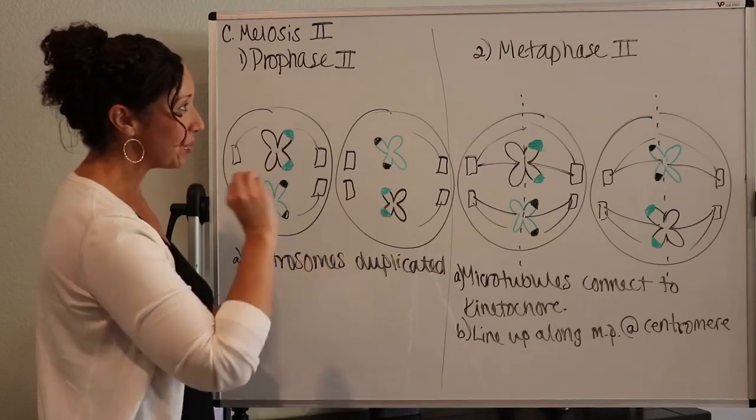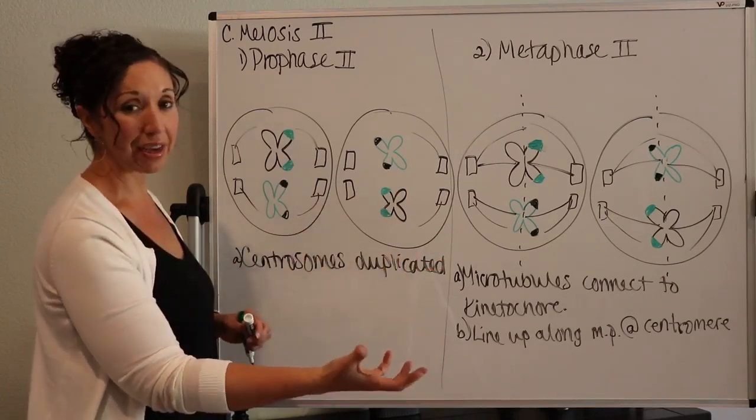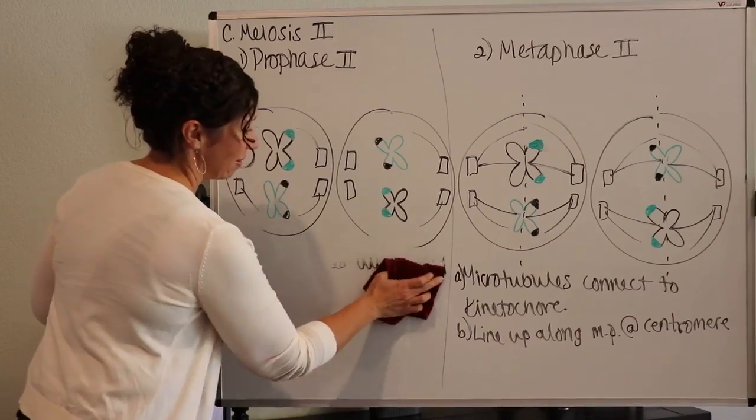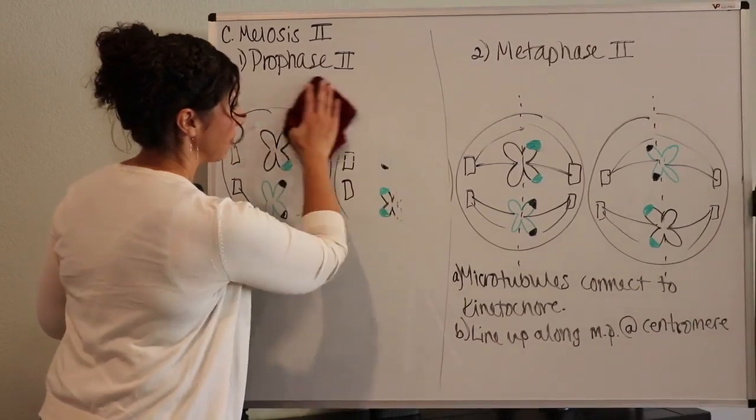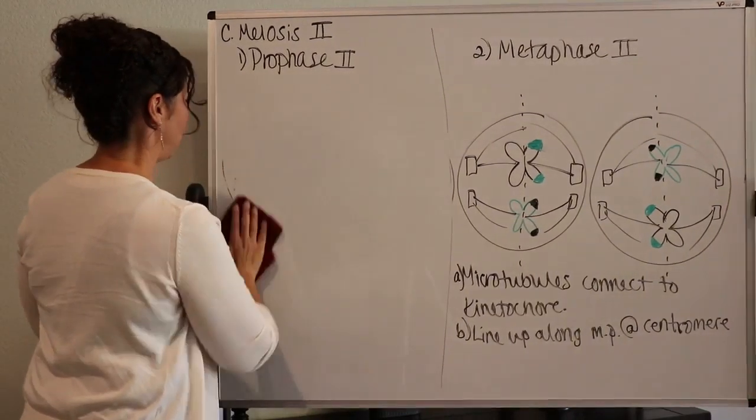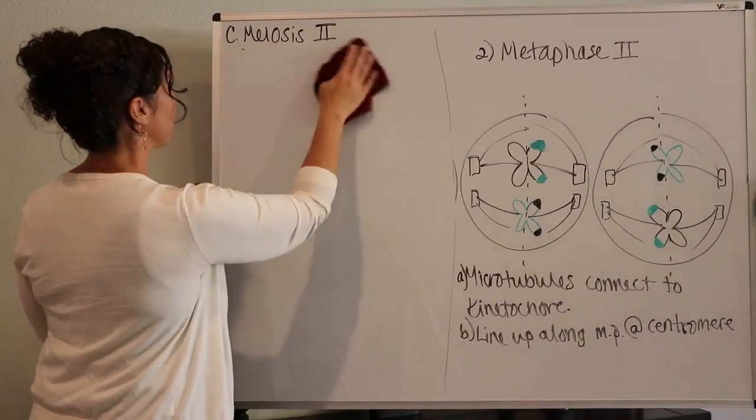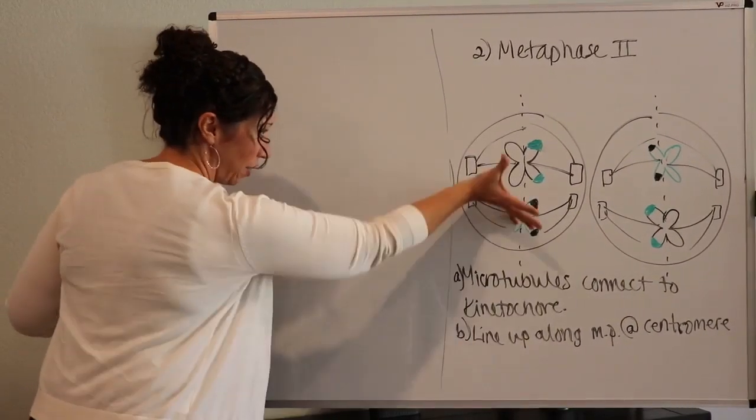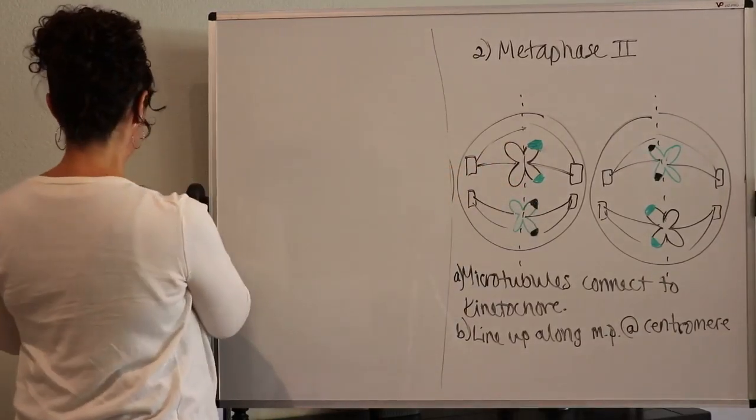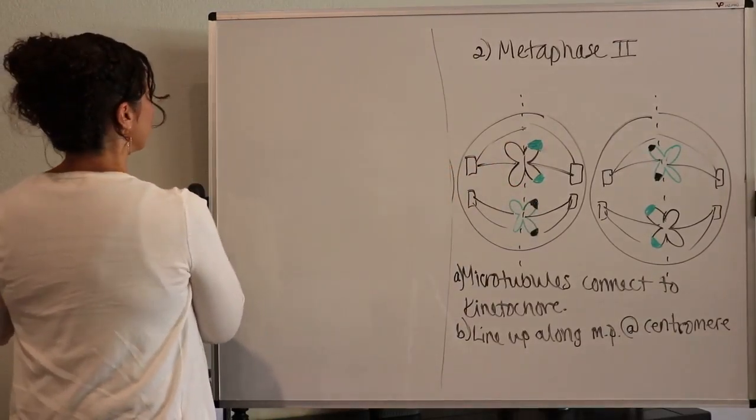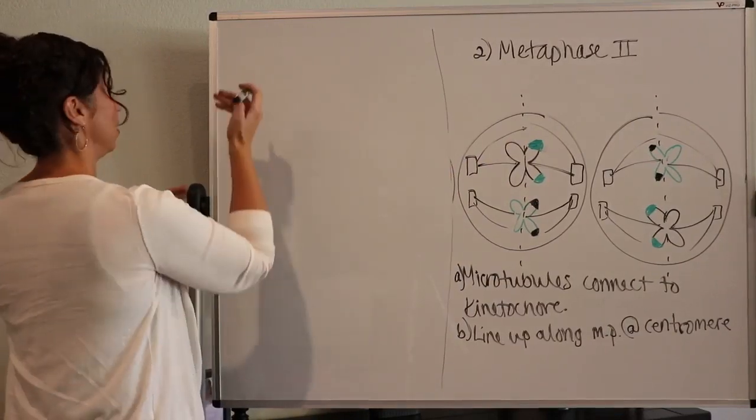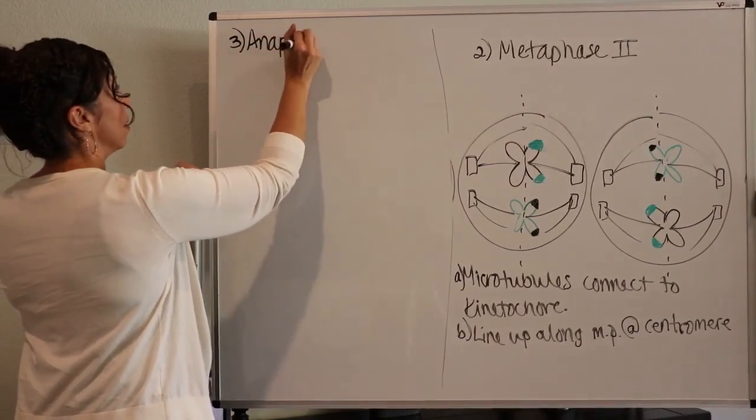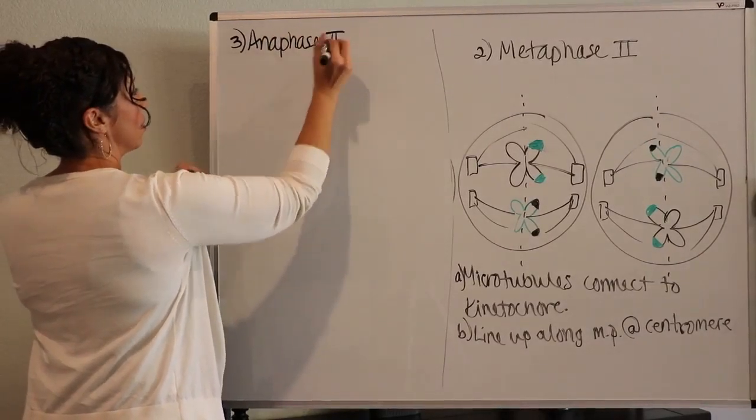Now, you know the routine. After metaphase two is going to come anaphase two. And just like an anaphase before, everything is going to migrate to the poles because those kinetochore microtubules are going to allow them to get pulled in. Brand new pen. Here we go. Number three. Anaphase two.